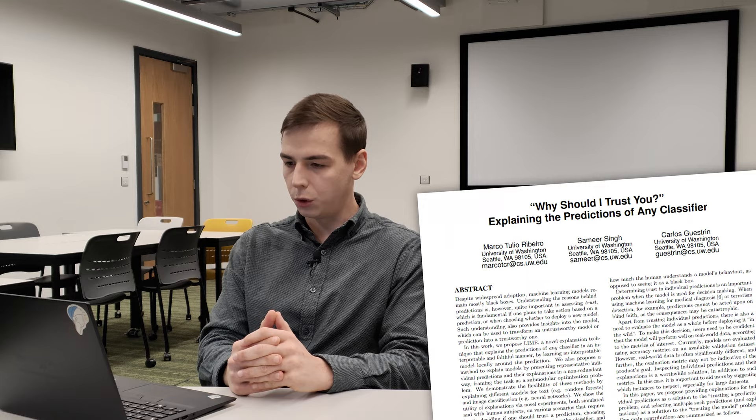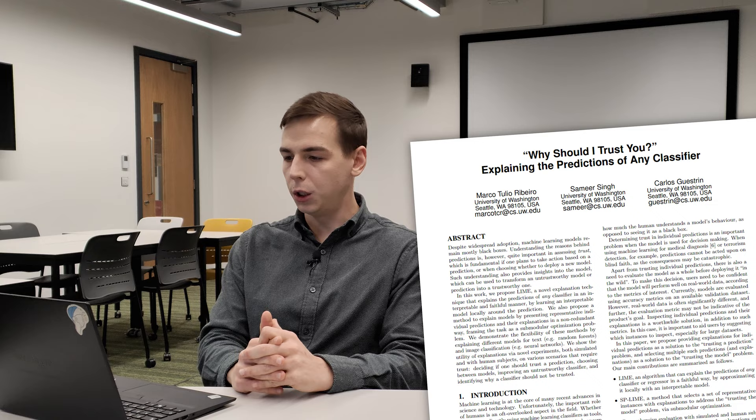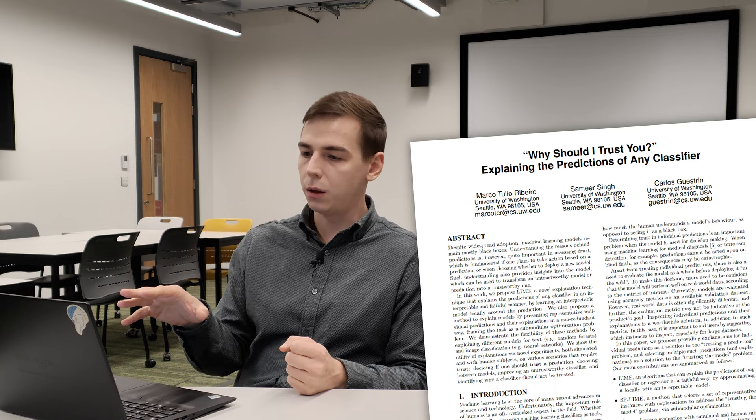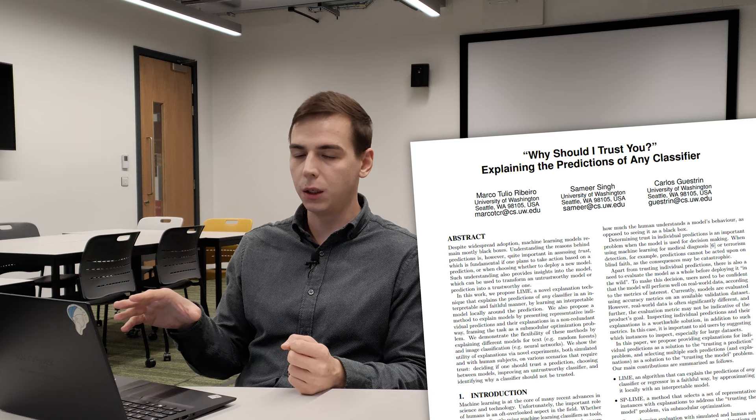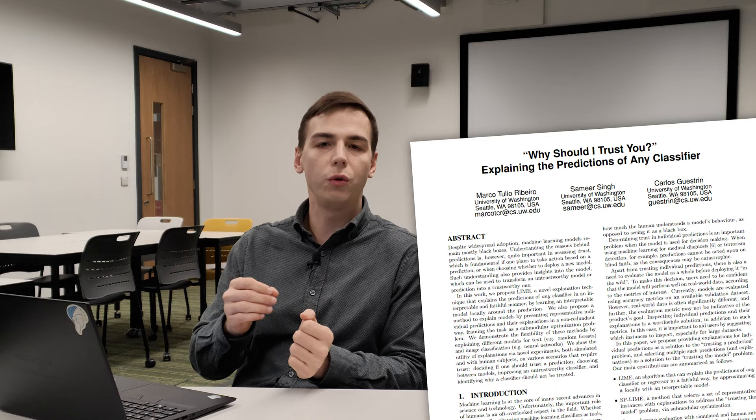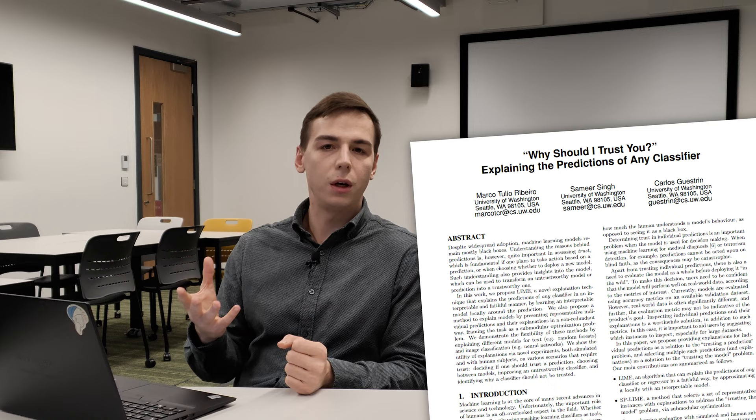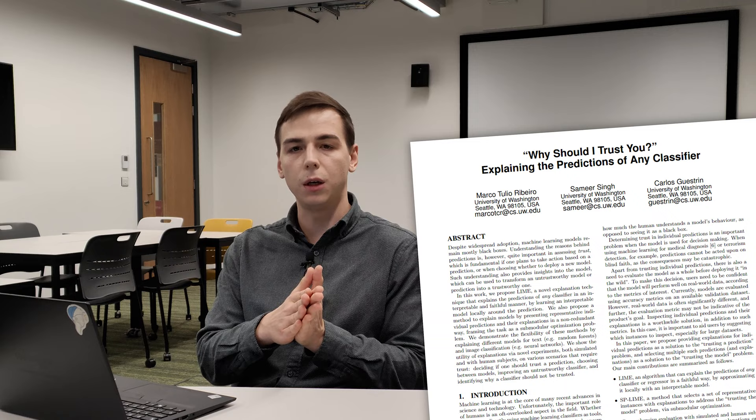There are many papers published about similar approaches. For example, a very famous paper from 2016 called 'Why Should I Trust You? Explaining the Predictions of Any Classifier.' In this paper, the authors developed a method called Local Interpretable Model-Agnostic Explanations (LIME). Basically, this method is close to leave-one-out because they remove certain features and datasets to evaluate what the impact and value of this data is. Since 2016, this paper has already been cited more than 15,000 times.